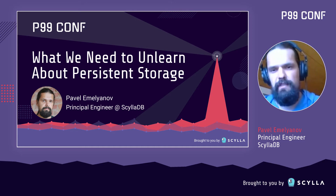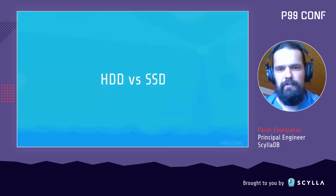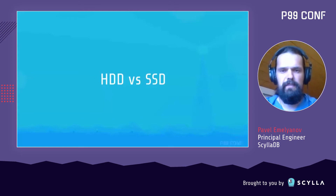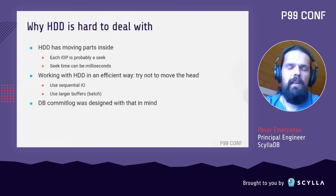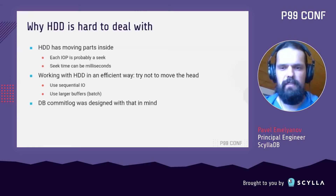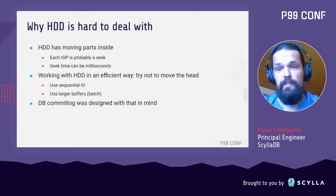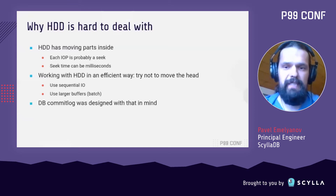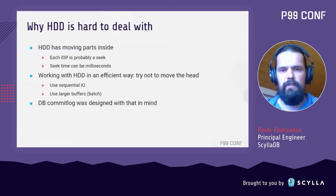Before diving into details, let's meet the main character of this talk, the SSD, and how it's thought to differ from its opponent, the HDD. Since HDDs appeared first, we'll start with them. It's well known that an HDD is a set of spinning plates and a head with a servo that positions it over the needed location over the plate stack. Each IO operation potentially involves head movement, which is often referred to as a seek.